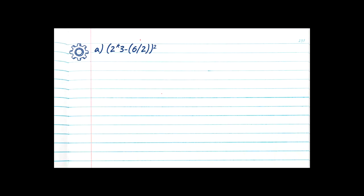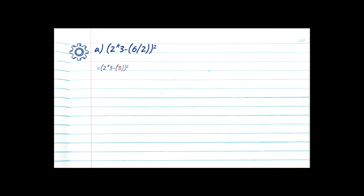Let's go ahead and look at example A. Right out of the gate we have an opening bracket, so we start over — are there any other brackets? We have 2 times 3 minus an opening bracket, so we found another bracket — start over again. Are there any brackets? 6 divided by 2, closing bracket — no more brackets, so we found the innermost bracket. Are there any exponents within our innermost bracket? No. So we move on to step 3: division. 6 divided by 2 is equal to 3, and we drop the rest of the equation.